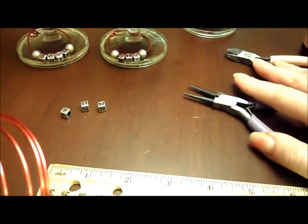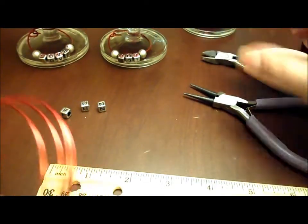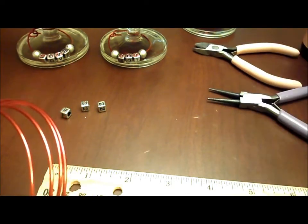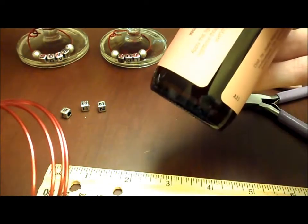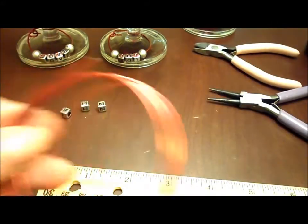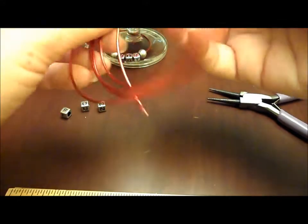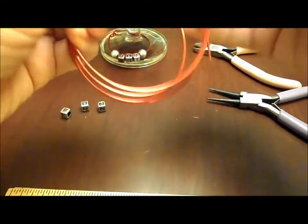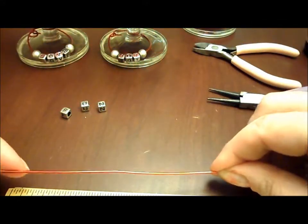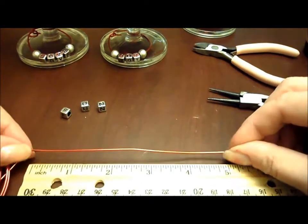So you're going to need a cutter, a round nose plier. You're going to need something round to form your ring with. This is very pliable, but you want something round. And a ruler. You want to measure out approximately six inches.